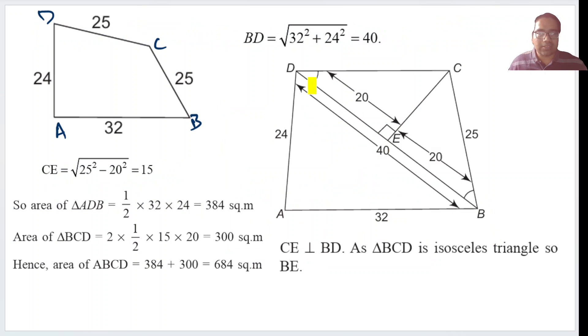Here we can draw this diagonal because this is a right angle triangle. This diagonal is equal to the square root of 32 squared plus 24 squared, because this is a right angle triangle and the hypotenuse is BD. So BD is equal to 40.